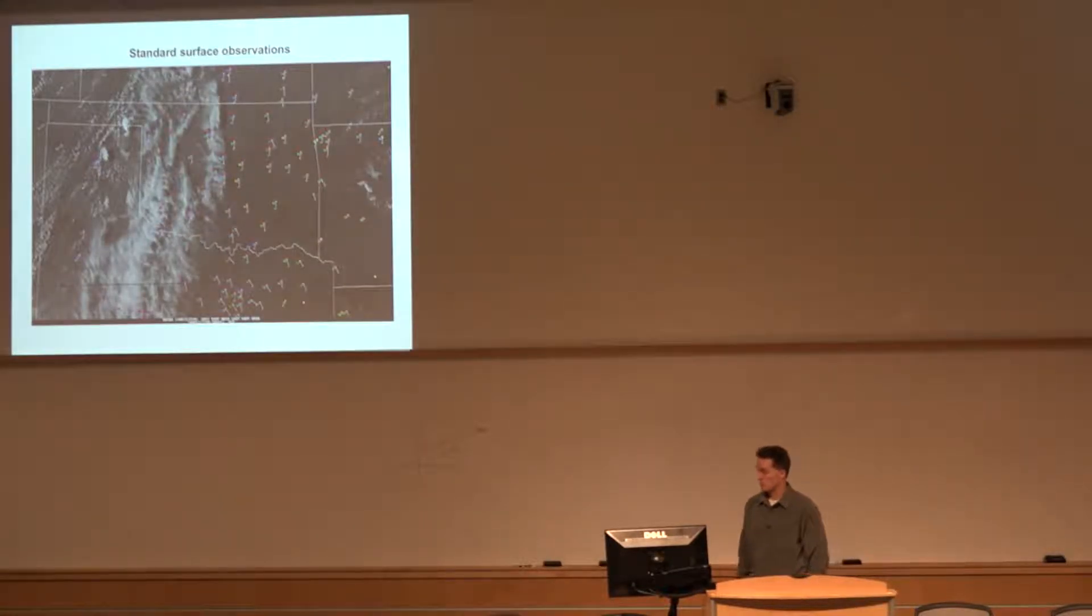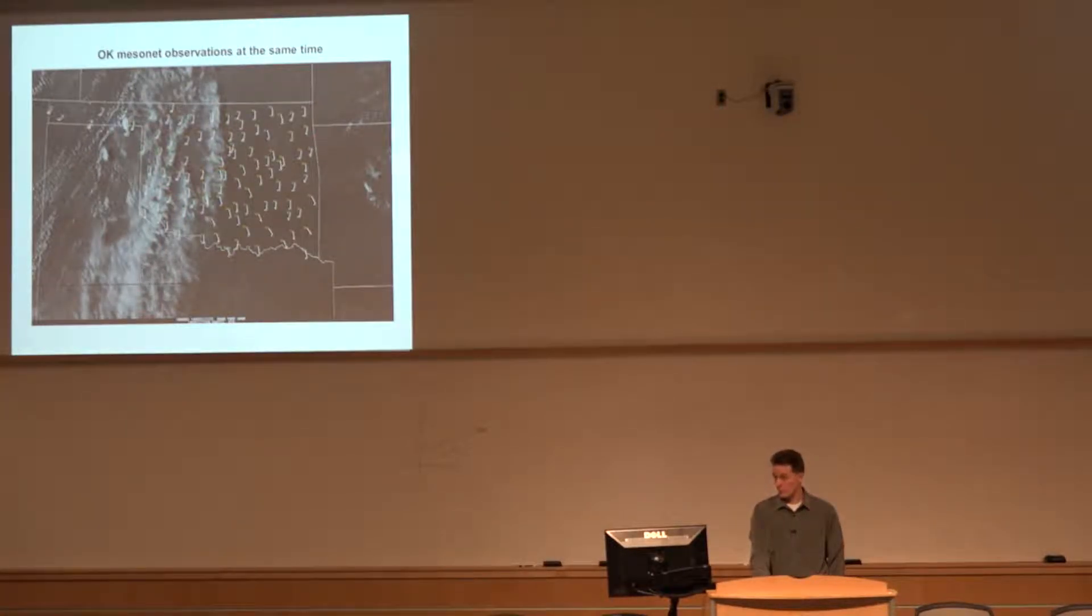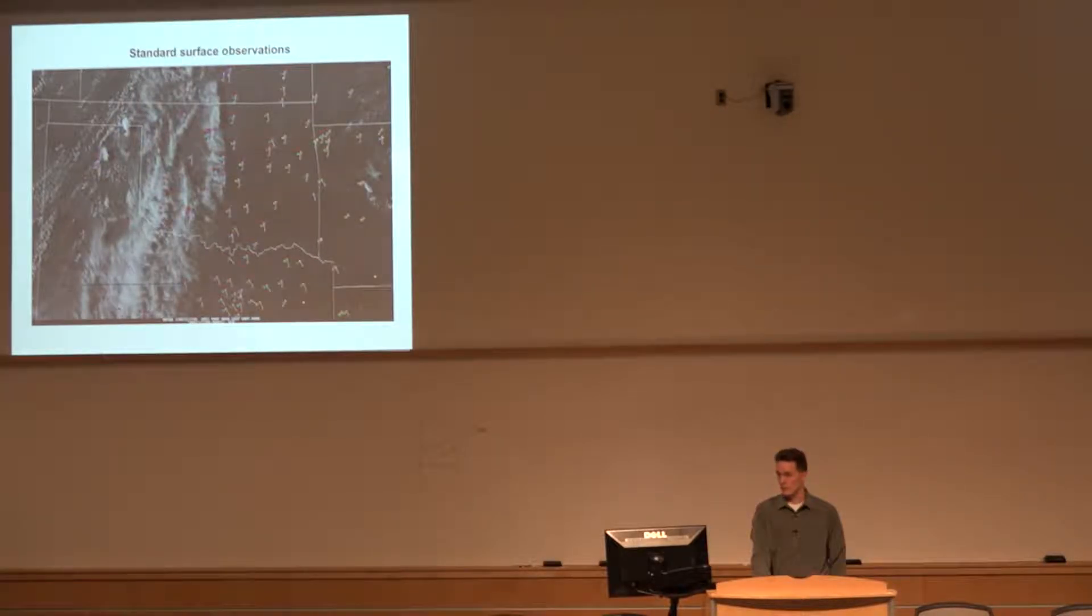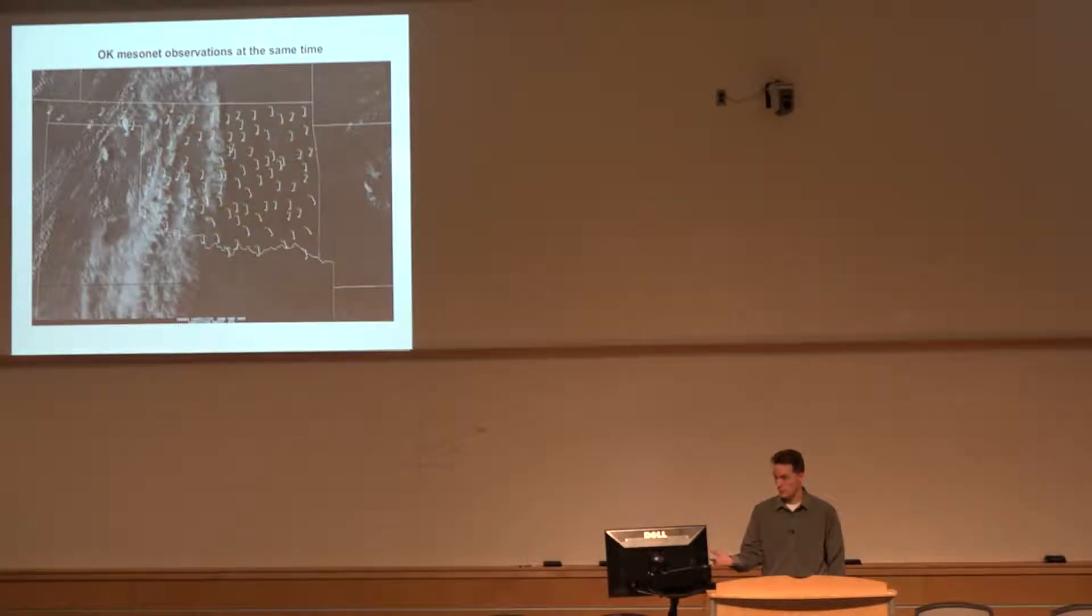Now I'm going to show a real-world example. This is just warm season in Oklahoma. What I've done is we're plotting the background regular observations, and then I'm going to show what it looks like. Here's the Oklahoma Mesonet, two different observing sources.